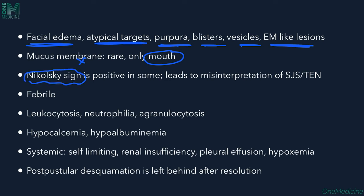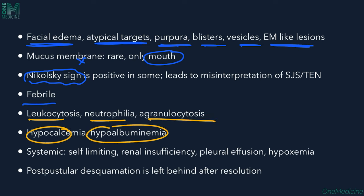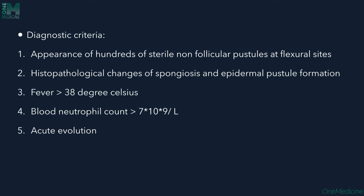Mucous membrane involvement is rare; if present, only the mouth is involved. Nikolsky sign may be positive, which can sometimes lead to misinterpretation as TEN or SJS. Patients can be febrile and may have leukocytosis, neutrophilia, agranulocytosis, hypocalcemia, and hypoalbuminemia. Systemic involvement is very rare but can include renal insufficiency, pleural effusion, or hypoxemia. Post-pustular desquamation may be left behind after resolution.